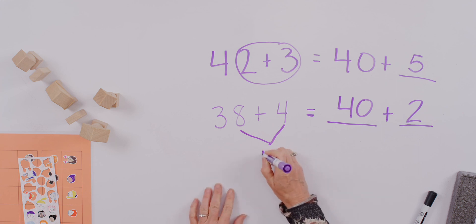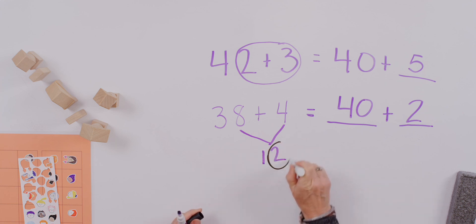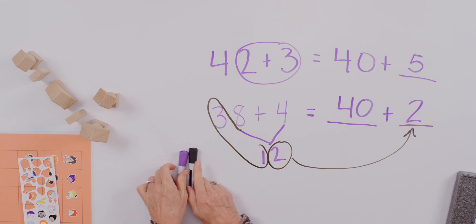So let me show you what just happened there. We thought of eight plus four equaling twelve. This is the two that ended up in the ones column. And we're putting together this ten with our three tens. And that way we've put all of our numbers together. And we can see now that thirty-eight plus four is equal to forty plus two.